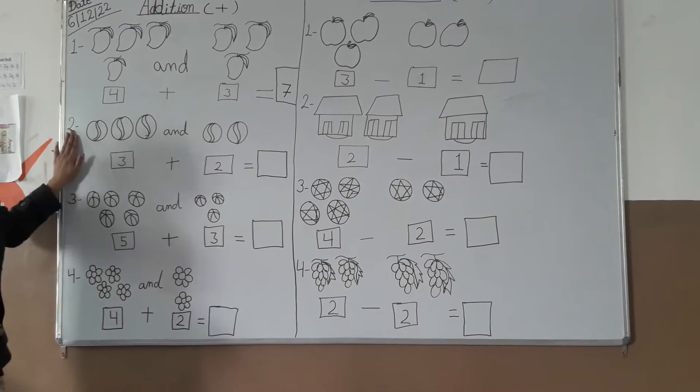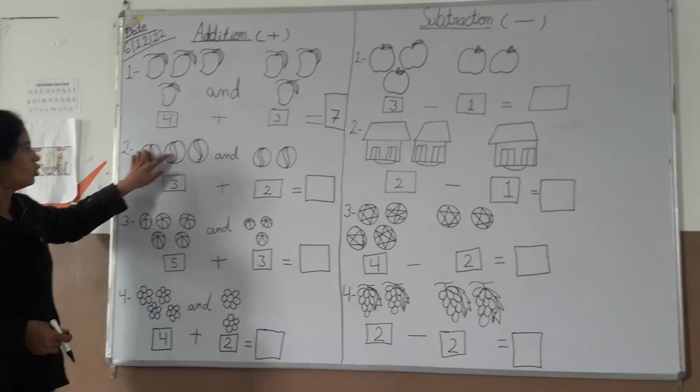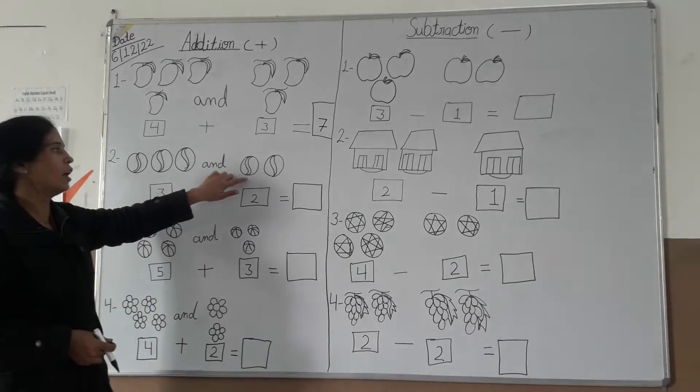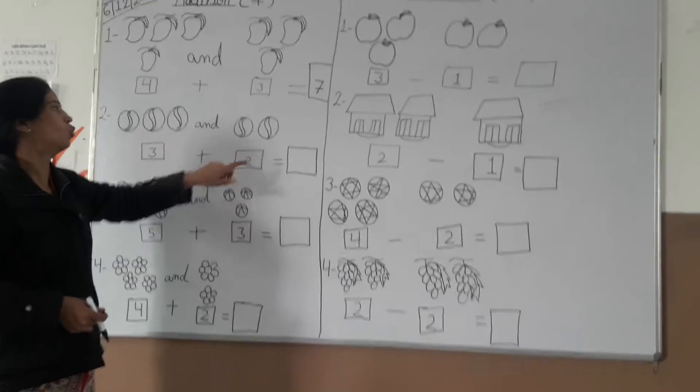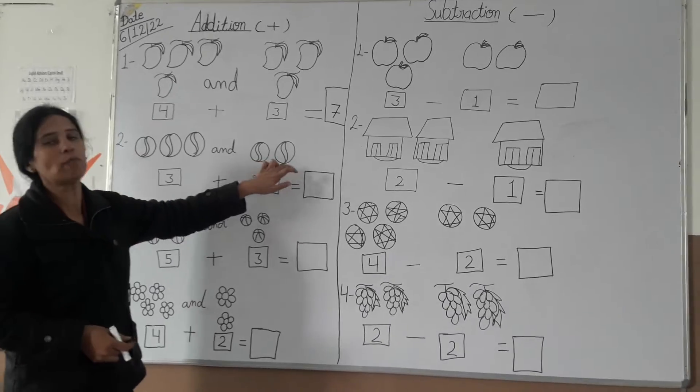Second example. What is this? Balls. One, two, three. Three. Next, one, two. Two. Counting together: one, two, three, four, five. Five.